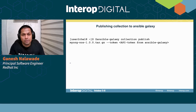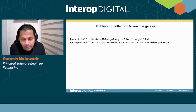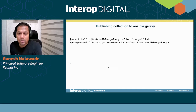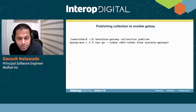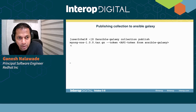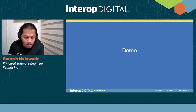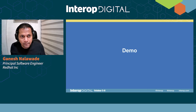Once everything is built, you can publish the collection to Galaxy using `ansible-galaxy collection publish <tarball> --token <token>`. The token is obtained from the Ansible Galaxy portal. When publishing, you must ensure that the namespace is created in your account — myorg here is the namespace and it must be present in Ansible Galaxy before running this command.